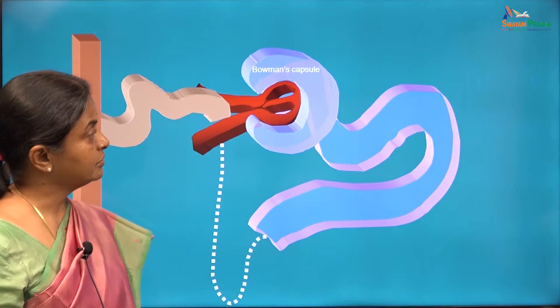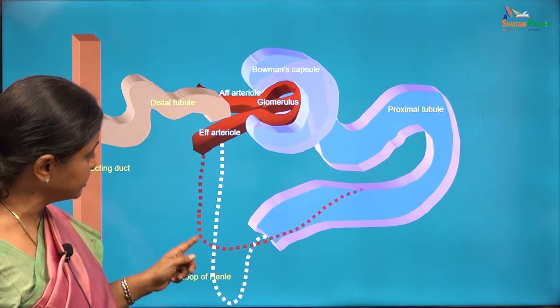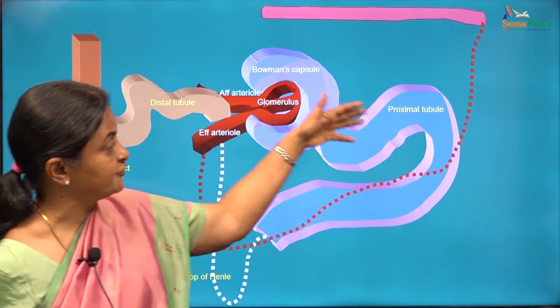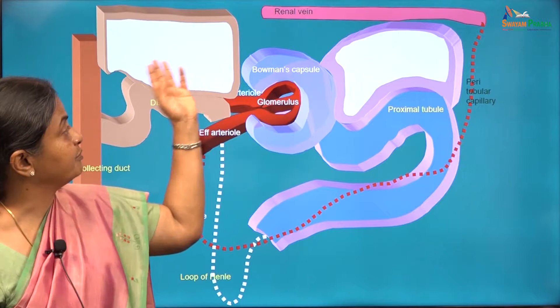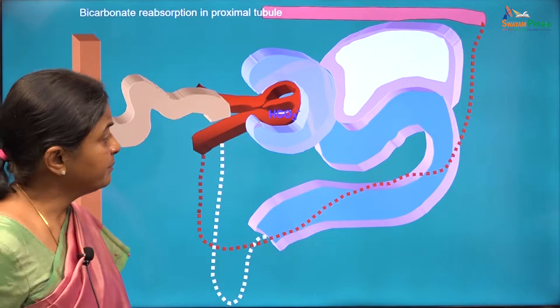Parts of the nephron: Bowman's capsule, proximal tubule, loop of Henle, distal tubule, collecting duct. Afferent arteriole, glomerulus, efferent arteriole — the efferent arteriole continues and winds around the PCT and DCT to form peritubular capillaries before ending in the renal vein. Bicarbonate reabsorption occurs in the proximal tubular cell and that is what we will consider first.